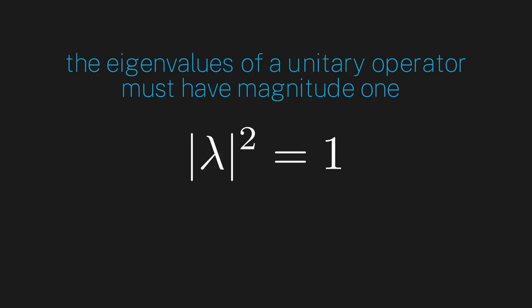This property should also make intuitive sense. Eigenvalues tell you how much the operator scales its eigenvector. So if we think of unitary operators as generalized rotations, they intuitively shouldn't change the length of their eigenvectors. Therefore, it makes sense that the eigenvalues have to have unit length.